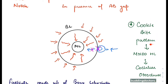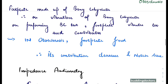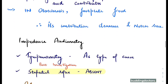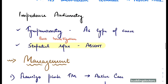A cookie bite pattern is seen in mixed hearing loss and cochlear otosclerosis. On impedance audiometry, tympanometry will show an AS type curve. The best investigation to diagnose otosclerosis is the stapedial reflex, which will be absent.